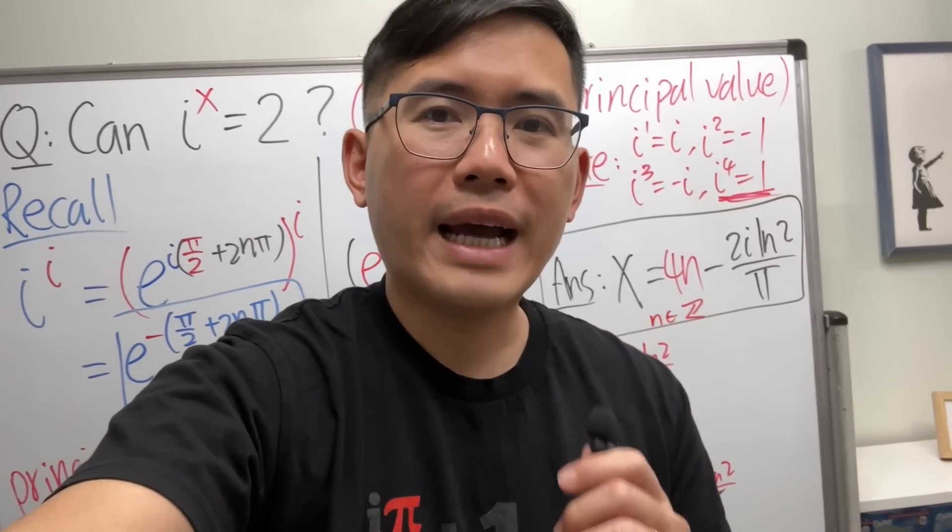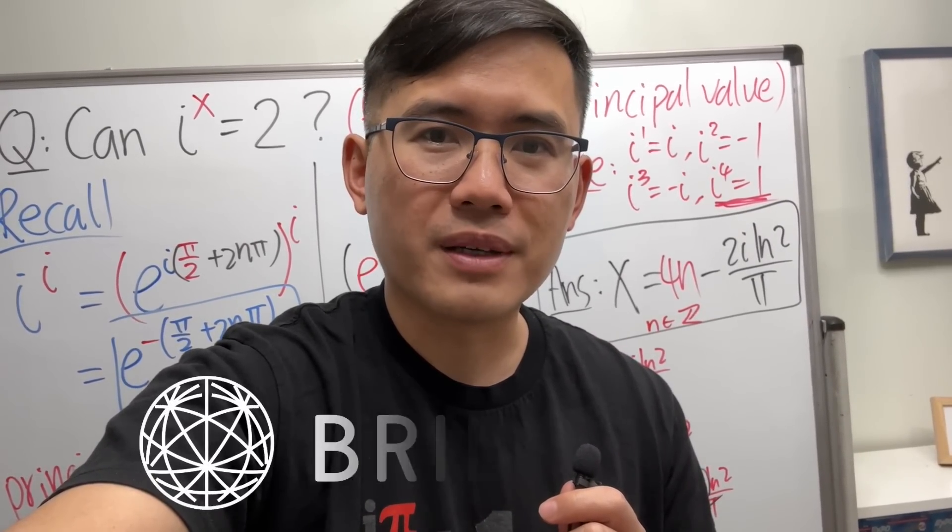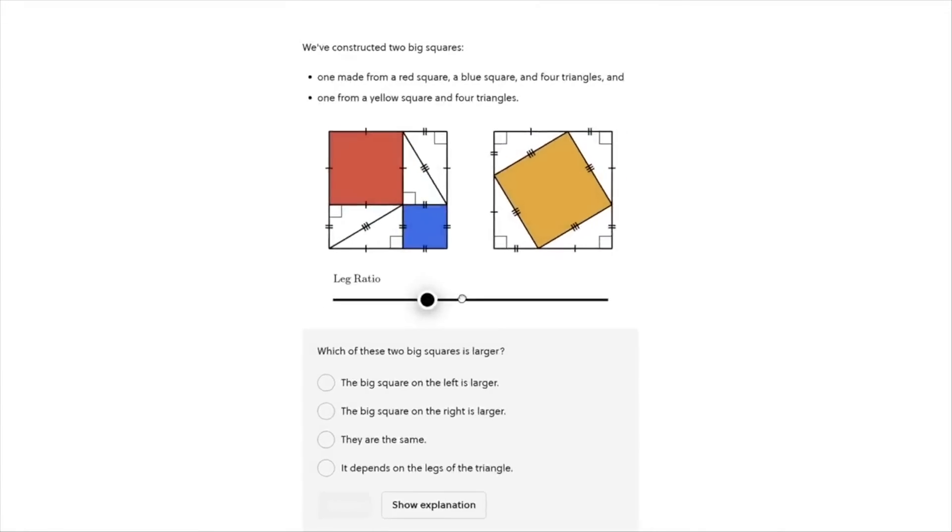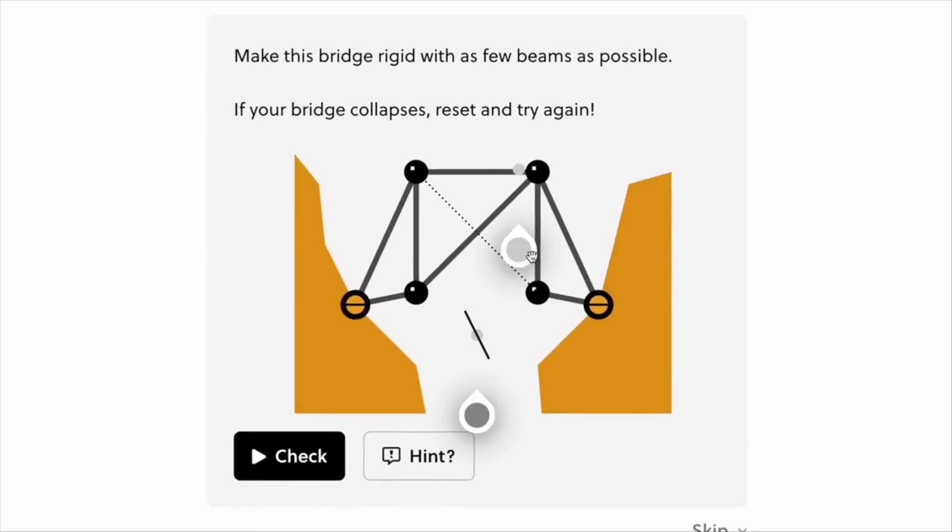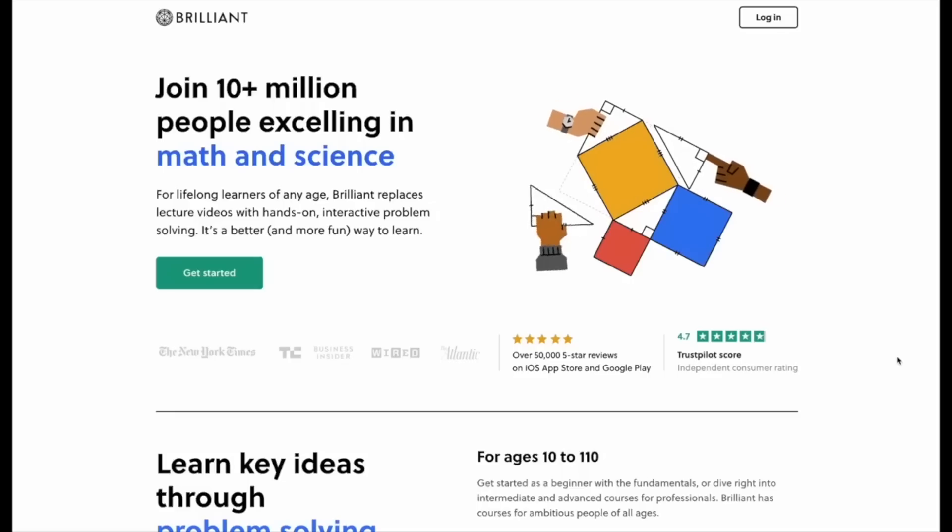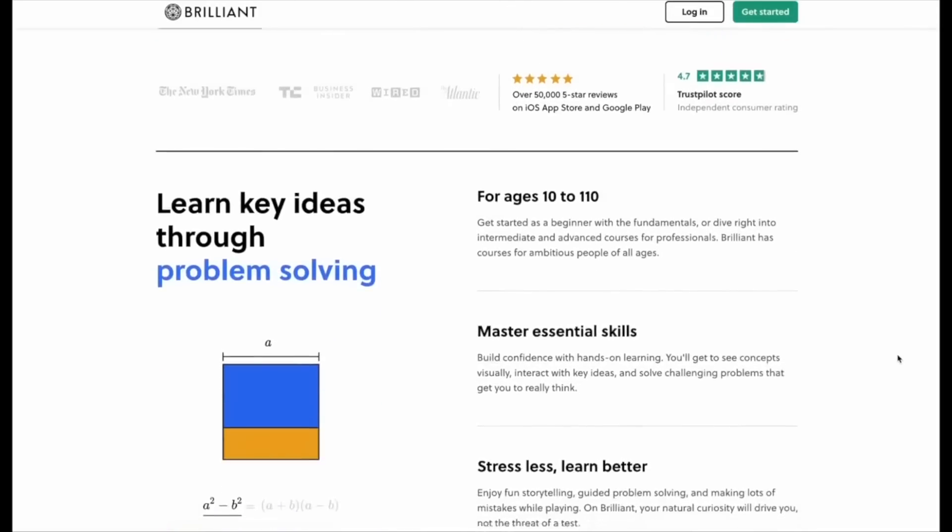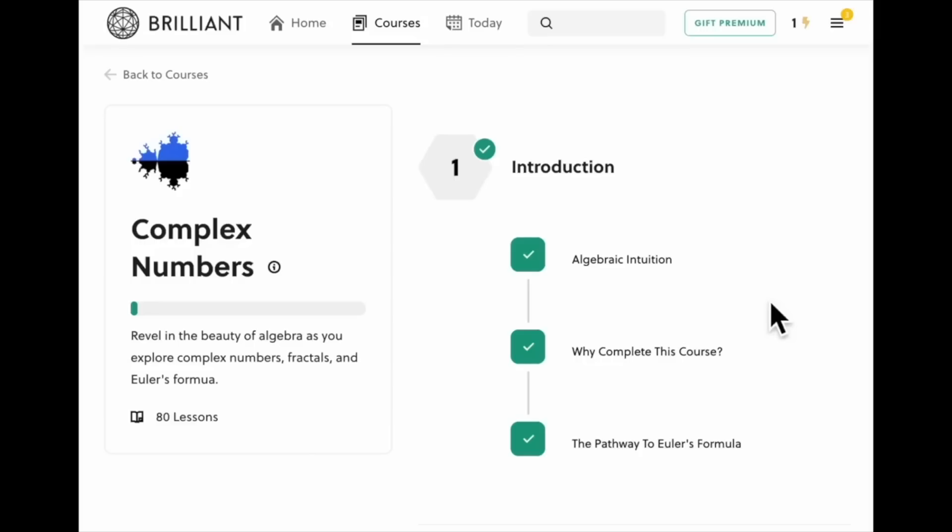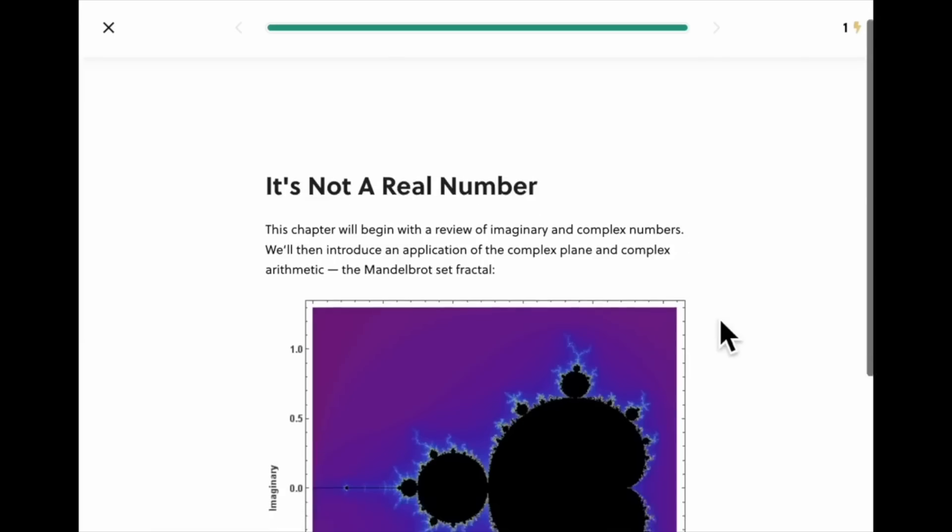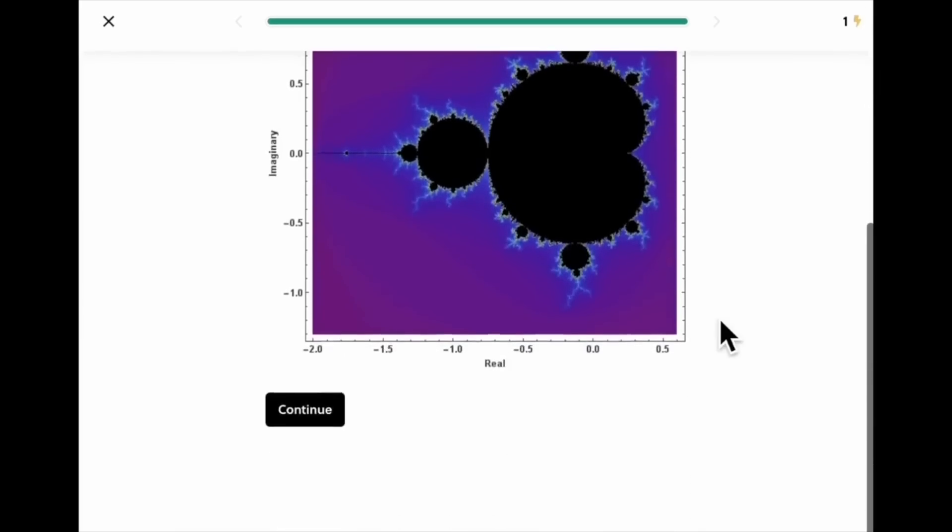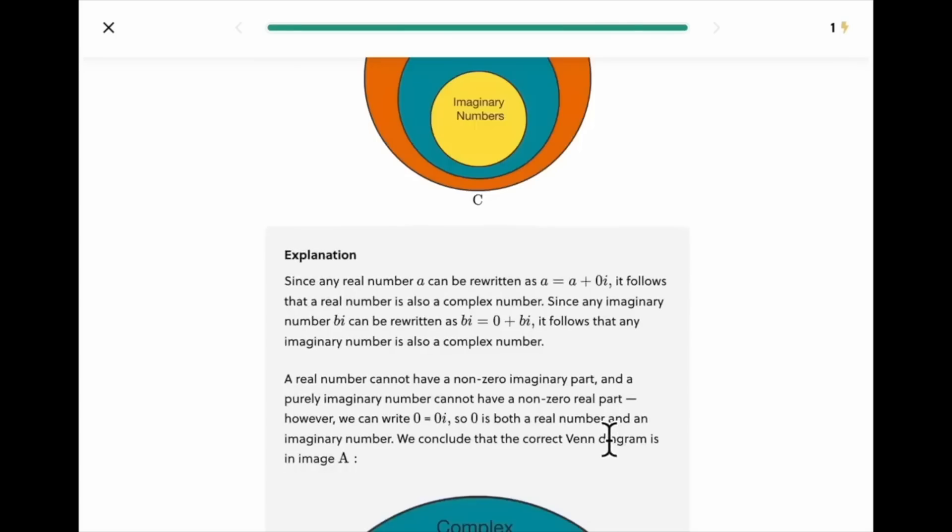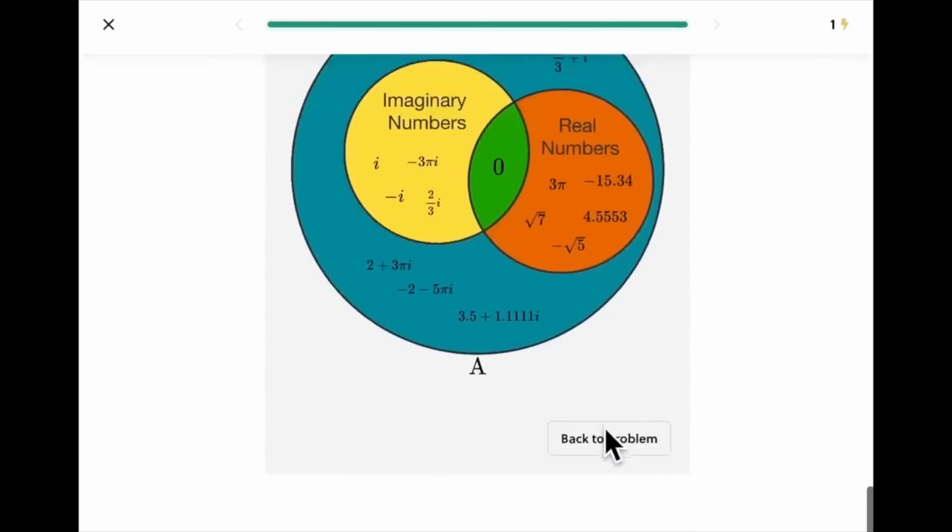Now if you want to learn more about complex numbers, I will highly recommend you check out today's sponsor, Brilliant. Brilliant is a perfect place for anyone who wants to learn math, science, and computer science in a deeper level. It has over 60 courses and thousands of interactive lessons, and it is still adding new ones every month. Now let me show you its complex number course. I hope you're just as excited as I am because it provides a lot more information and interactive practice on the scenes from today's video, and of course that is the complex numbers and Euler's identity.